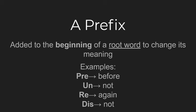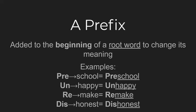Remember, a prefix is added to the beginning of a root word to change its meaning. Some examples of prefixes are: pre, which means before; un, which means not or the opposite of; re, which means again; and dis, which also means not. Some examples of root words with prefixes added: preschool means before school, something you go to before kindergarten. Adding un to happy makes unhappy — you are not happy. Adding re to make gives remake, which means to make again. Adding dis to honest makes dishonest, meaning not honest.